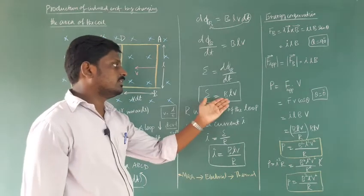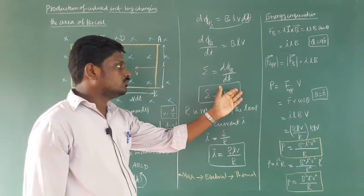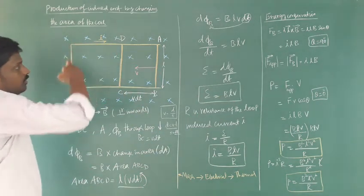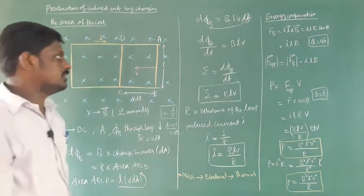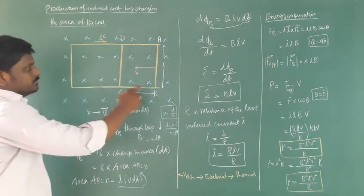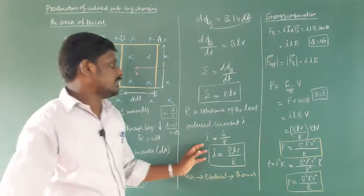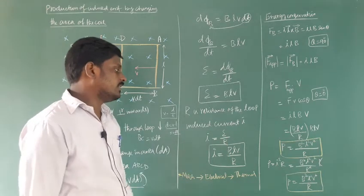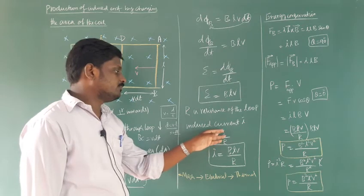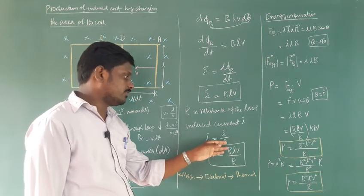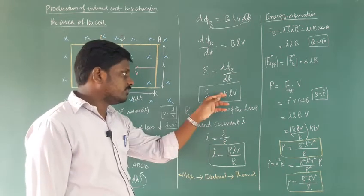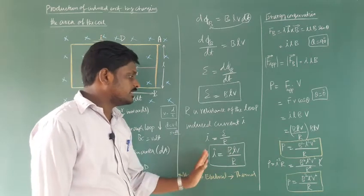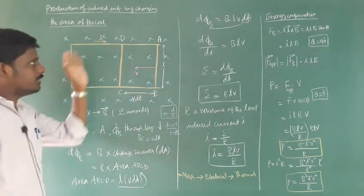So dΦ/dt equals BLV, and therefore the magnitude of induced EMF equals BLV — the product of magnetic field, length of the rod, and velocity of the rod. The loop has a resistance R. By Ohm's law, I equals V/R, so the induced current I equals BLV/R. That is the current flowing through the metallic frame.